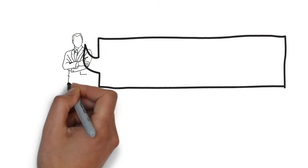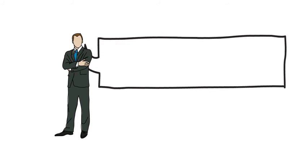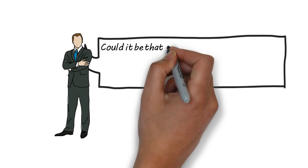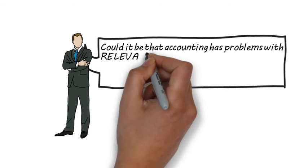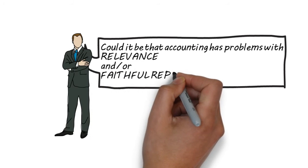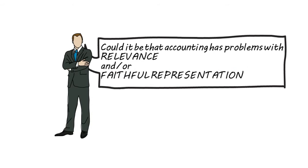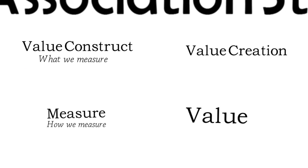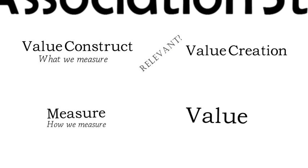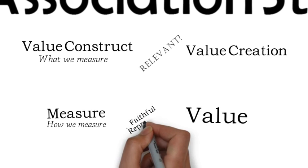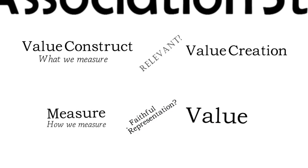This might lead us to wonder whether we, as accountants, are measuring the right things — that they actually do lead to increased value in the organization, or in other words, we might question the relevance of what we measure. But even if we are measuring the right things, if we don't do so faithfully, the market will not believe and therefore will not react to the accounting information. This is the faithful representation issue. A breakdown of either relevance or faithful representation will reduce the association between accounting earnings and share price.